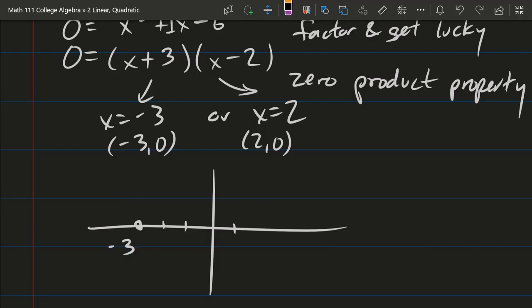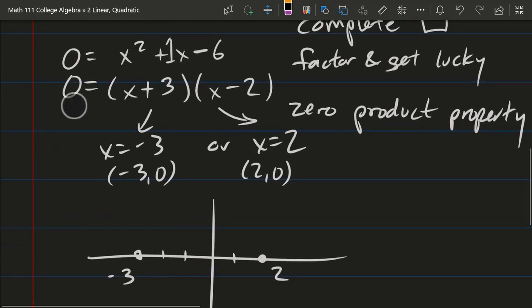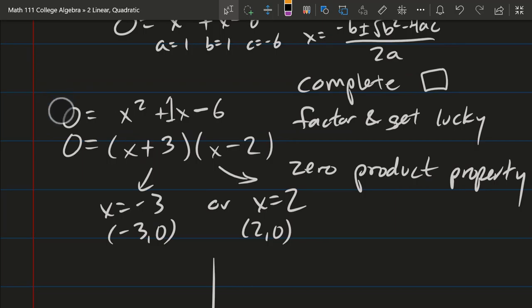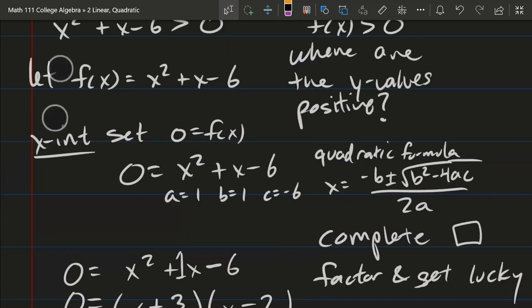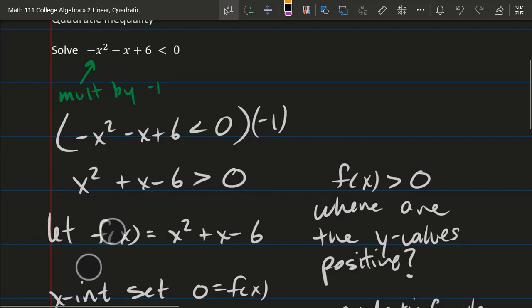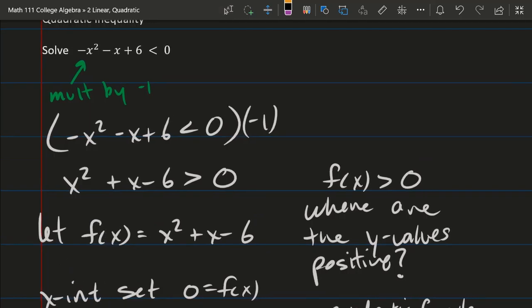These are x-intercepts. We're going to graph them as negative 3, zero and 2, zero. So there's negative 3 right there. I'm actually going to put it below. Positive 2 is out here.